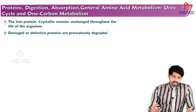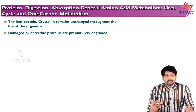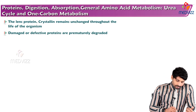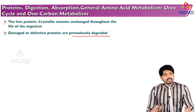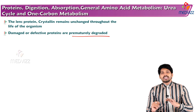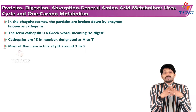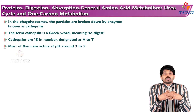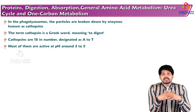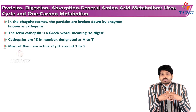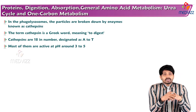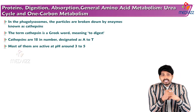Lens proteins such as crystallin remain unchanged throughout the life of the organism, whereas damaged or defective proteins are prematurely degraded because they are of no use and simply occupy space. Phagolysosomes are the particles in which proteins are broken down by enzymes known as cathepsins. The term cathepsin is a Greek word meaning 'to digest.' Cathepsins are 18 in number, designated A to T, and most are active at acidic pH around 3 to 5.